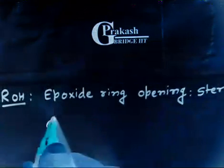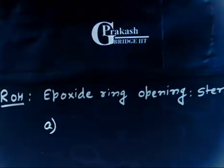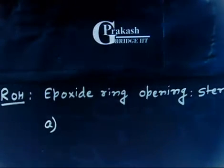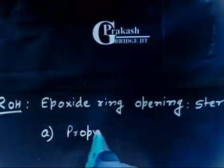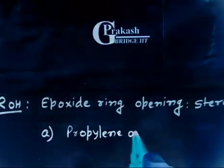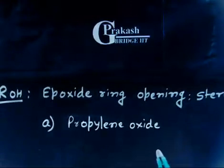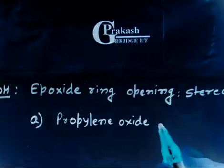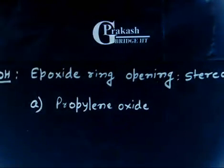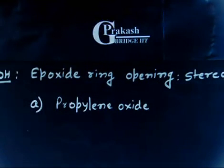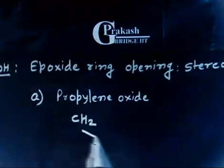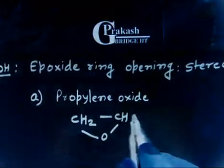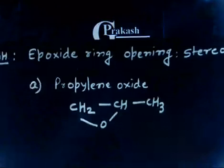You have to draw the structure of the enantiomer of Propylene Oxide. First write the structural formula of Propylene Oxide and then you can proceed. So you have CH₂-O-CH-CH₃. This molecule is Propylene Oxide.